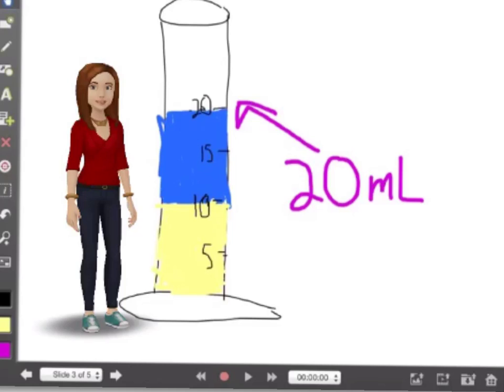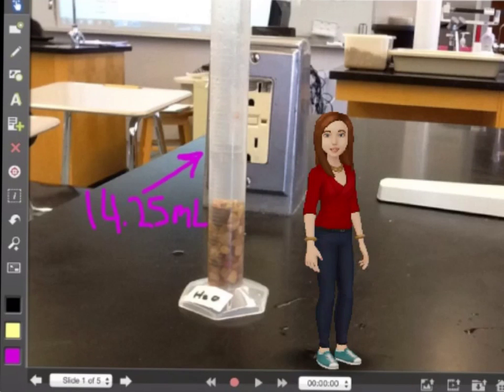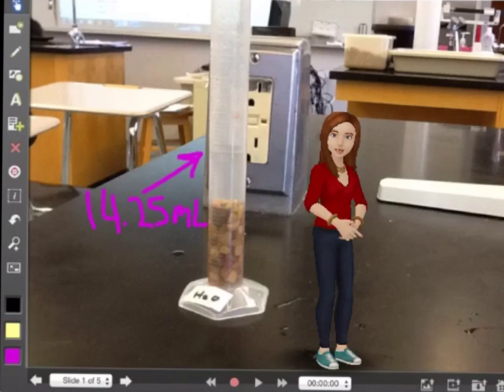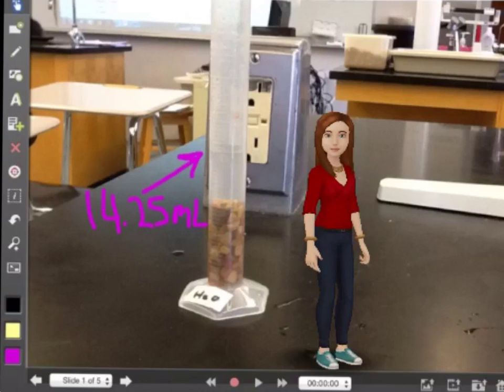If the sand had no airspace, the water would rest right on top of it, and it would be a total volume of 20 milliliters. But since the sand does have airspace, the volume is only 14.25 milliliters.